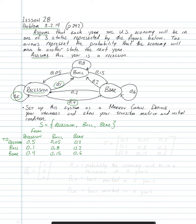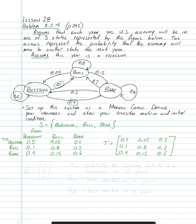From this transition table, we get our transition matrix T. T has all the entries from the table: 0.5, 0.1, 0.4, 0.05, 0.8, 0.15, 0.2, 0.2, and 0.6. That's our transition matrix.